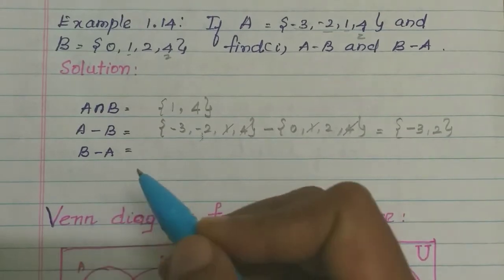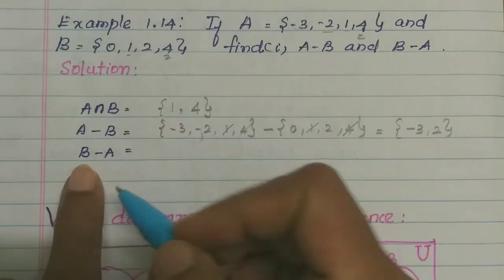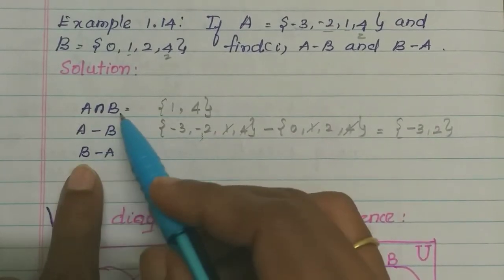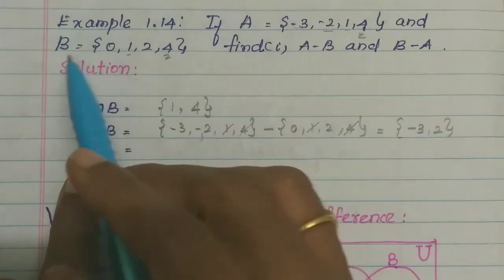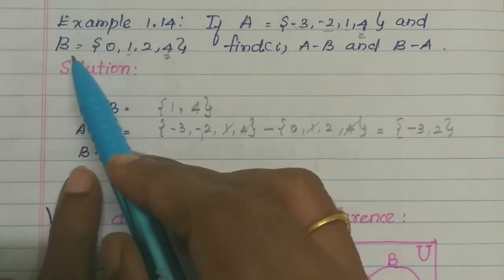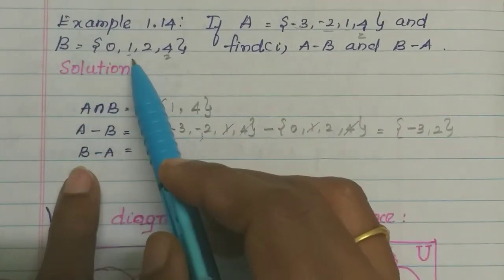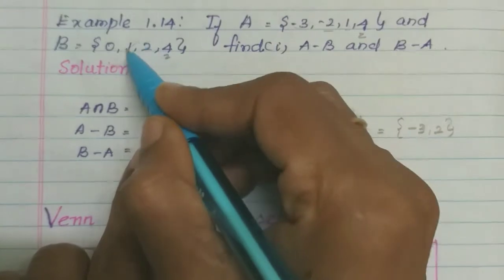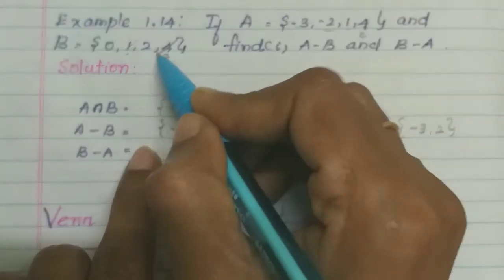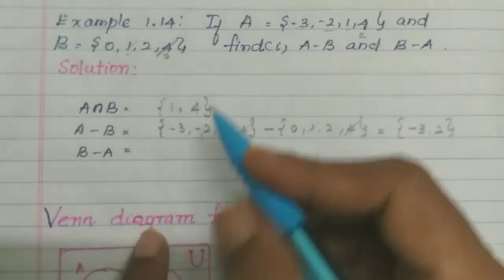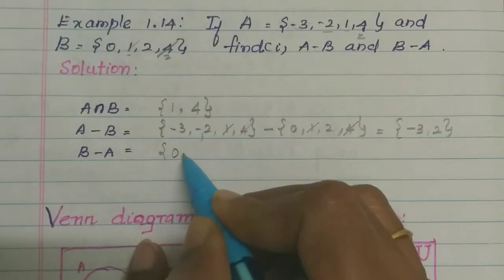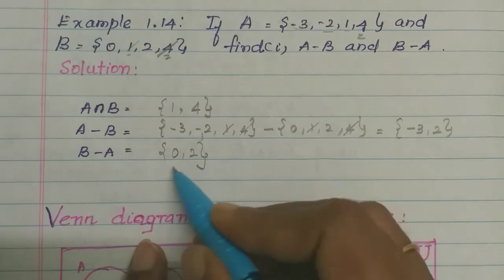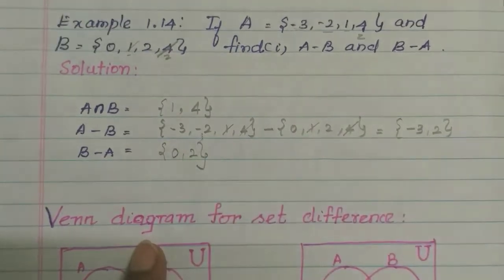Now B minus A: B is the set {0, 1, 2, 4}. We remove the common elements, which are 1 and 4. The remaining elements are 0 and 2. So B minus A is equal to {0, 2}.